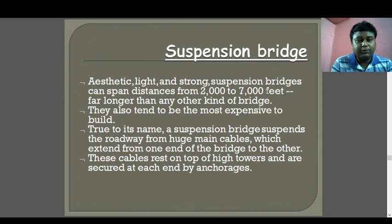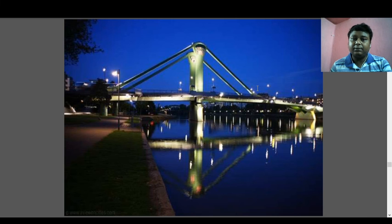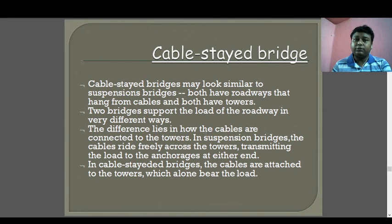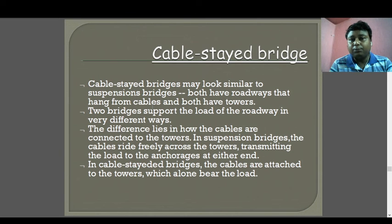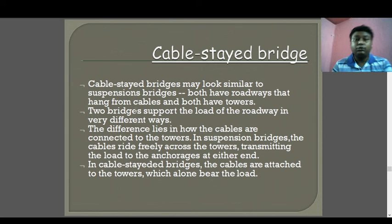Cable-stayed bridges look similar to suspension bridges — both have roadways that hang from cables and both have towers — but they support the load of the roadway in very different ways. The difference lies in how the cables are connected to the towers. In suspension bridges, the cables reach freely across the towers, transmitting load to anchorages at either end. But in cable-stayed bridges, the cables are attached to the towers which alone bear the load.